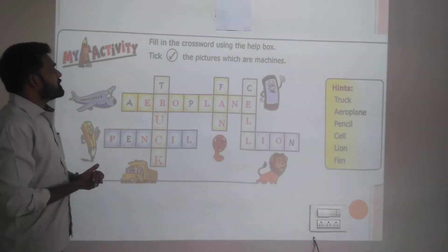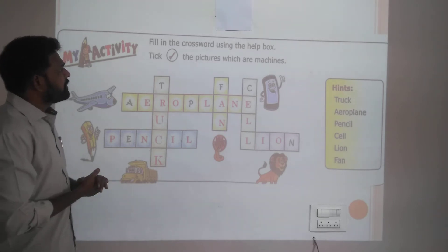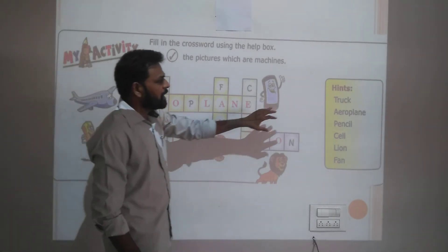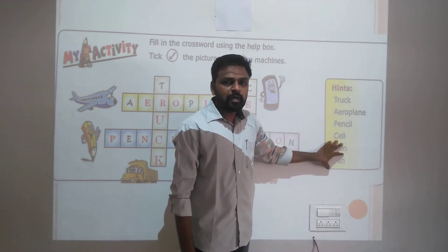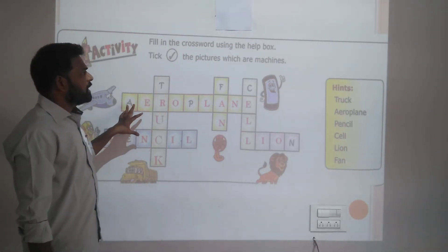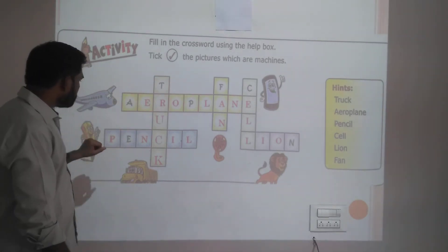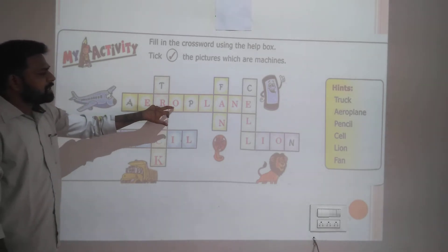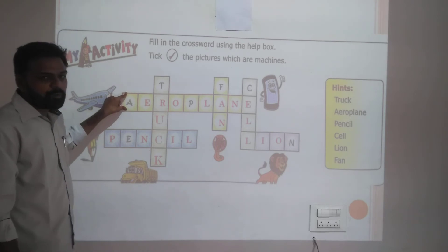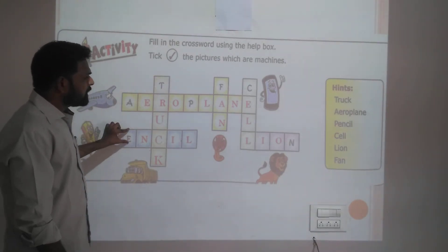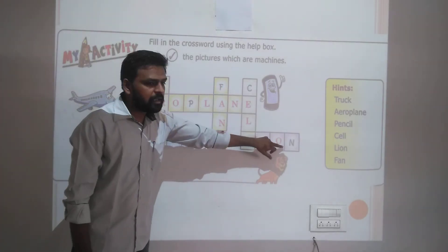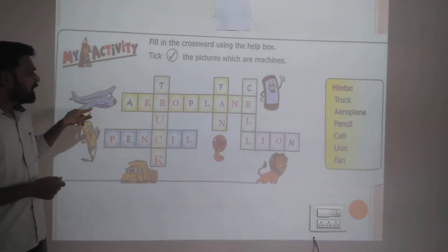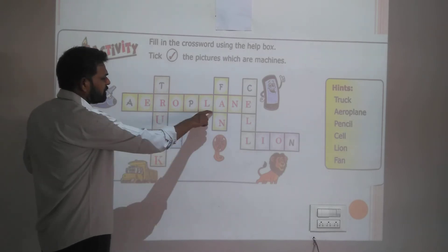This is the last activity — filling the crossword. This crossword has horizontal and vertical words. Using the help box, you have words with pictures of machines. Now you can see the horizontal word — this is aeroplane. Write the spelling: A, E, R, O, P, L, A, N, E. Aeroplane is your horizontal word.